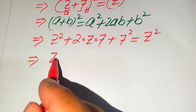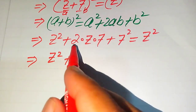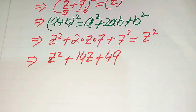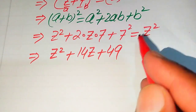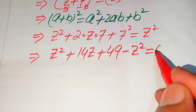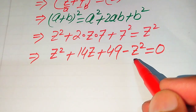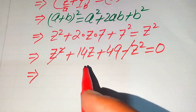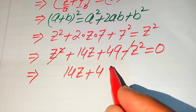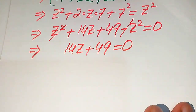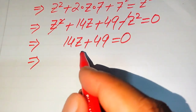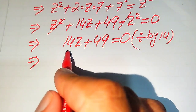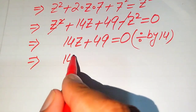Expanding gives z² + 2·z·7 + 7² = z², which becomes z² + 14z + 49 = z². We move z² to the left hand side — the +z² and −z² cancel out — and we get 14z + 49 = 0. Our target is to find z, so we divide both sides by 14.